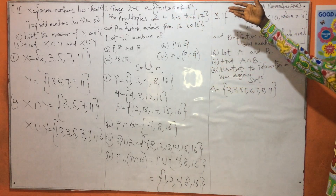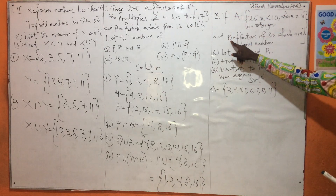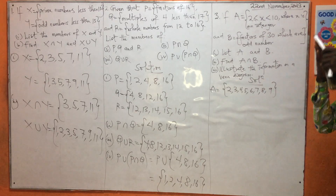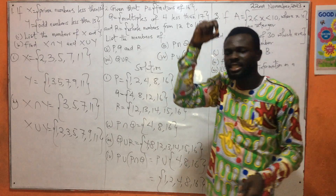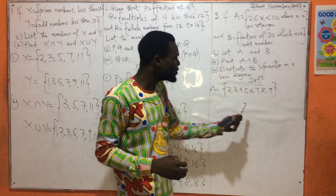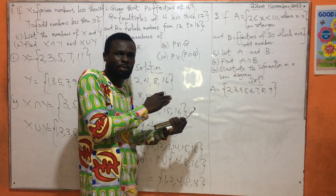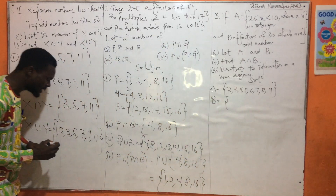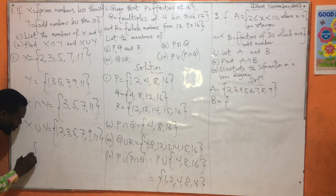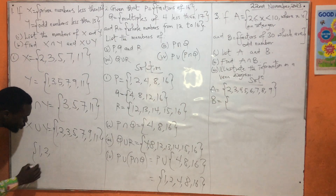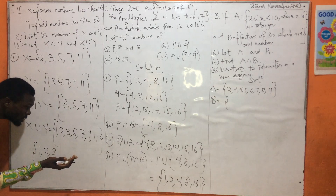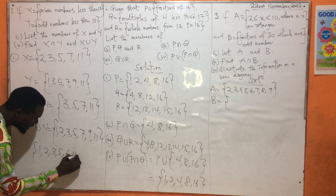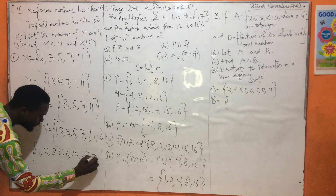Then B is factors of 30 which are odd numbers. To be safe, let us first list the factors of 30 somewhere and fish out the odd numbers. Factors of 30: we have 1, 2, 3, 5, 6, 10, 15, and 30.